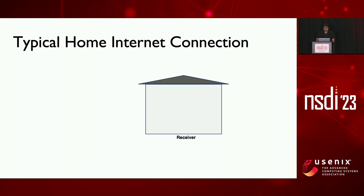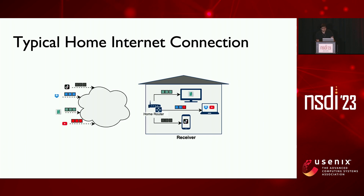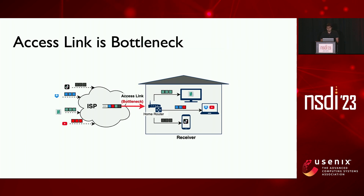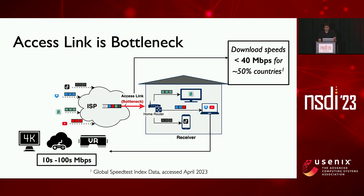Here is what a typical home internet connection looks like. You have multiple devices running different applications connected to a home router, and these applications download flows from different senders which share the same access link provided by the ISP. This access link is often the bottleneck for these flows. More than 50% of countries have download speeds less than 40 Mbps, whereas modern applications have high bandwidth requirements — 4K video, for example, requires more than 25 Mbps.